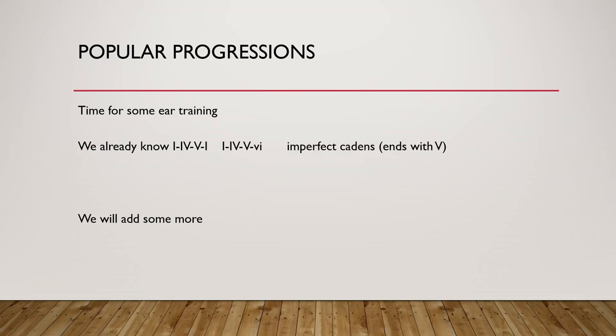We've talked enough about the chords, so I think we have time for some more ear training. We already know the 4-5-1 progression, which is a perfect cadence; 4-5-6 minor, which is the deceptive cadence; and the imperfect cadence where the music ends with a 5 chord. We will add some more today.